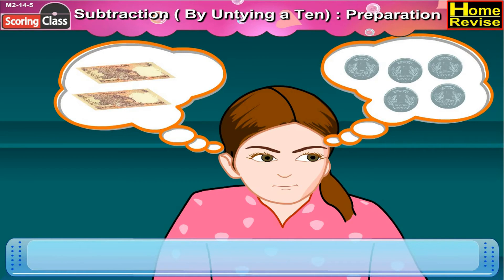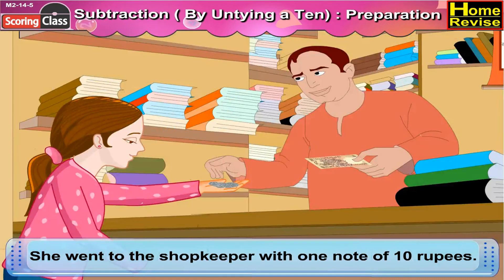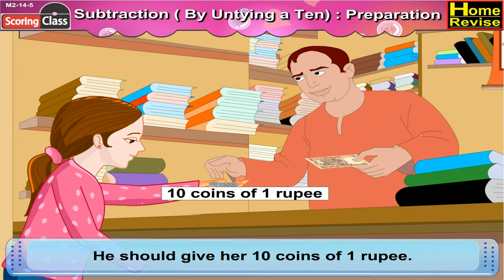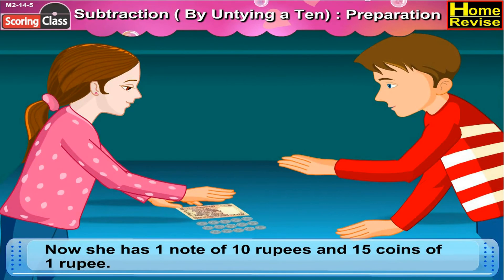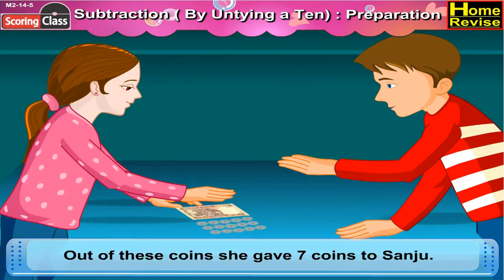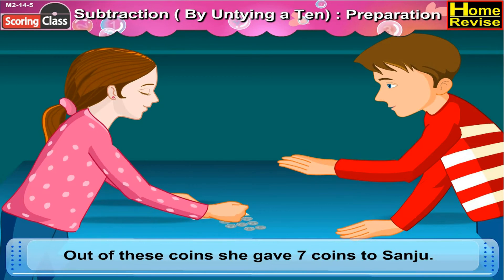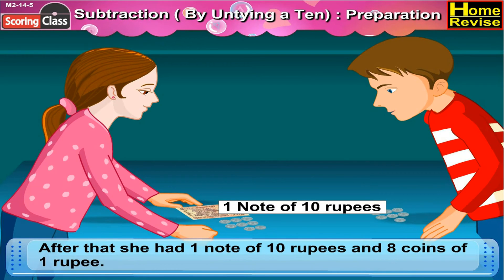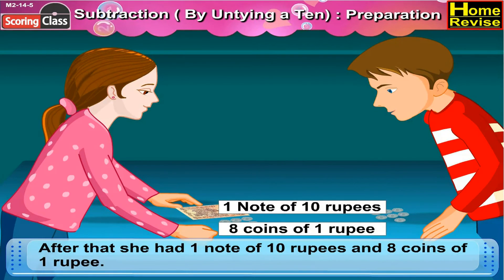Then she thought, and here came the idea. She went to the shopkeeper with one note of ten rupees, and asked him to give her ten coins of one rupee in return. Now she had one note of ten rupees and fifteen coins of one rupee. Out of these coins, she gave seven coins to Sanju. After that, she had one note of ten rupees and eight coins of one rupee.